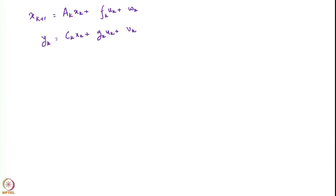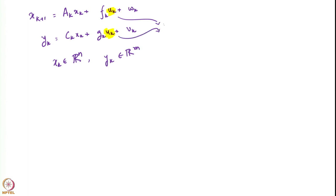The x's and y's are vectors here. Let us assume x_k's are all in some R^n and y's are all in some R^m. The u_k's here are a known exogenous sequence — a disturbance whose value we know. The w's and v's comprise noise.